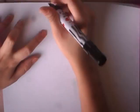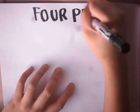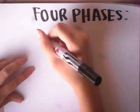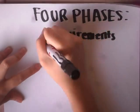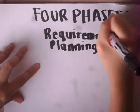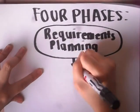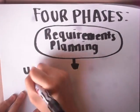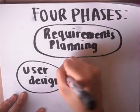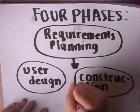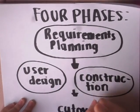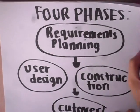RAD has four phases. First is the requirements planning phase. Second is the user design phase. Third is the construction phase. And lastly, the cut-over phase.